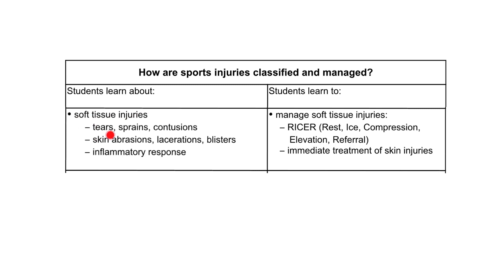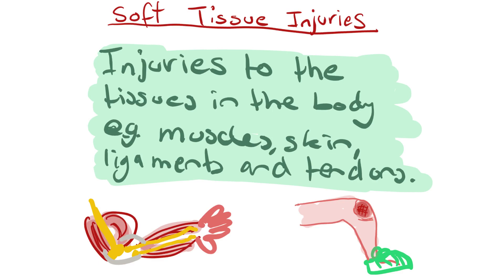We're going to explore tears, sprains and contusions, skin abrasions, lacerations, and blisters. The inflammatory response will be covered in another video combined with the management of soft tissue injuries. Soft tissue injuries are injuries to the tissues in the body — for example, muscles, skin, ligaments and tendons.